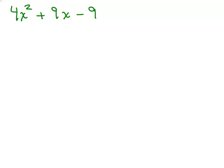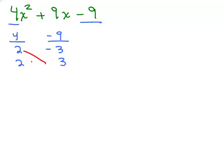Here's another example — try it on your own first by putting the video on pause if you'd like. We're going to take the factors of 4 and the factors of negative 9. The factors of 4 could be 4 and 1 or 2 and 2 — I'll start with 2 and 2. The factors of negative 9 mean we'll use opposite signs, so either 9 and 1 or 3 and 3. Let's start with 3 and 3: one would have to be negative. Crisscrossing: 2 times 3 is 6, and 2 times negative 3 is minus 6, giving 0 — but I need positive 9, so that didn't work.